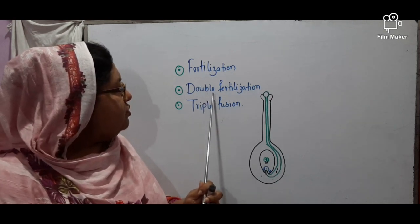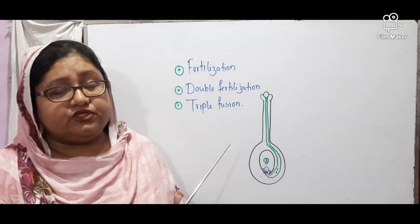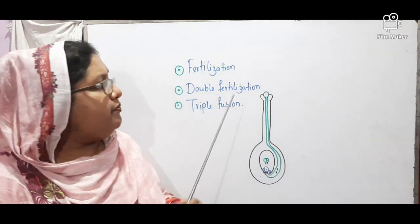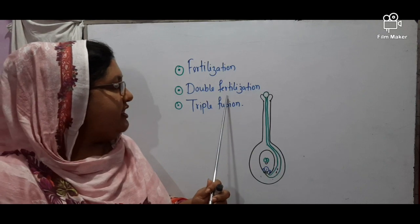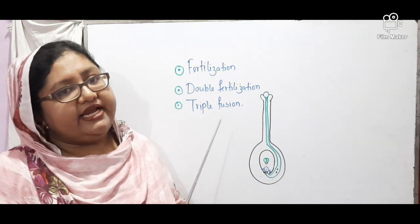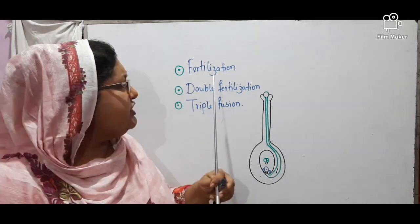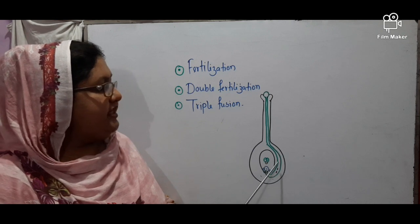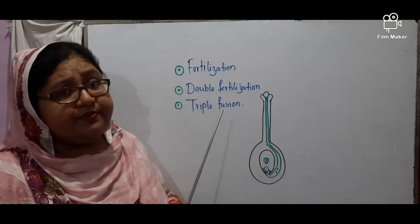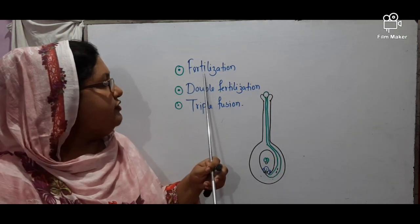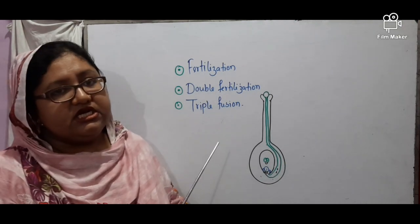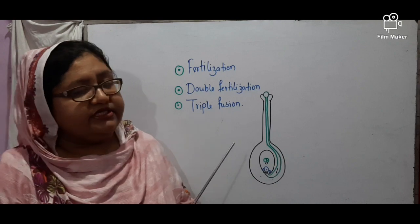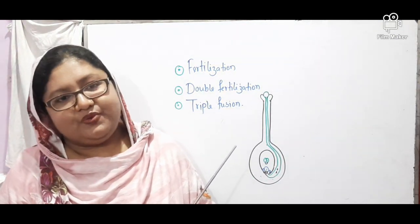I want to explain the difference between fertilization and double fertilization. In fertilization, only one male gamete fuses with the egg. In double fertilization, one male gamete fuses with the egg and another fuses with the secondary nuclei, requiring two male gametes. Also, no triple fusion occurs in fertilization, but triple fusion does occur in double fertilization. In my next class, I will be back with a new lesson. Till then, take care.